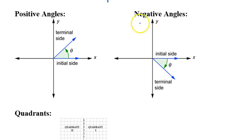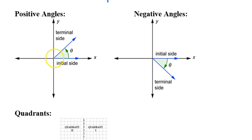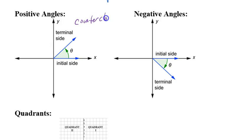The next thing we want to talk about is the difference between positive and negative angles. Positive and negative are just a way to describe the direction the angle is traveling. Both are shown in standard position — the initial side is on the positive x-axis, the vertex is at the origin. The green arrow tells us which way we're going. For positive angles, we're going counterclockwise.